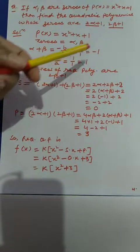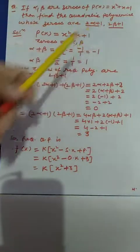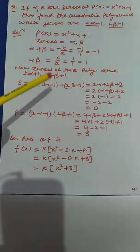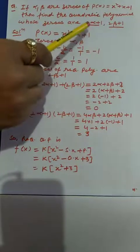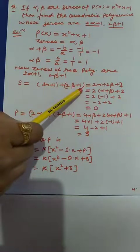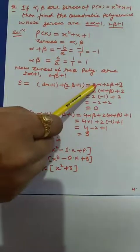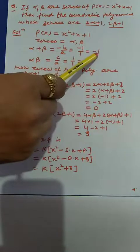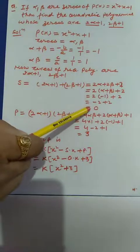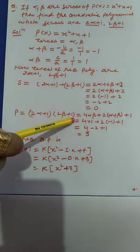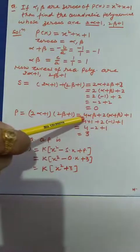Now I have to find another quadratic polynomial with zeros 2·alpha plus 1 and 2·beta plus 1. I will find the sum and product of these new zeros. Sum equals (2·alpha plus 1) plus (2·beta plus 1) equals 2·alpha plus 2·beta plus 2. Replacing alpha plus beta with minus 1, the sum of zeros equals 0. After multiplying and replacing values, the product of zeros of the new polynomial comes out to be 3.